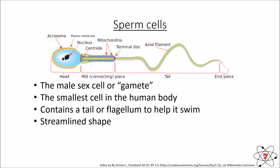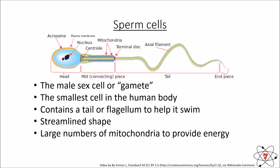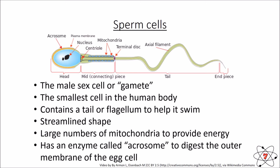Sperm cells are also streamlined, helping them move more easily through whatever they're swimming through. They contain a large number of mitochondria, which convert glucose and oxygen into energy — because sperm cells are moving, they need a lot of energy. Sperm cells also contain a special enzyme called an acrosome, which helps digest the outer layer of an egg cell so the sperm can get inside. Despite all these special features, the sperm cell is still an animal cell — it still has a nucleus, membrane, cytoplasm, and mitochondria.